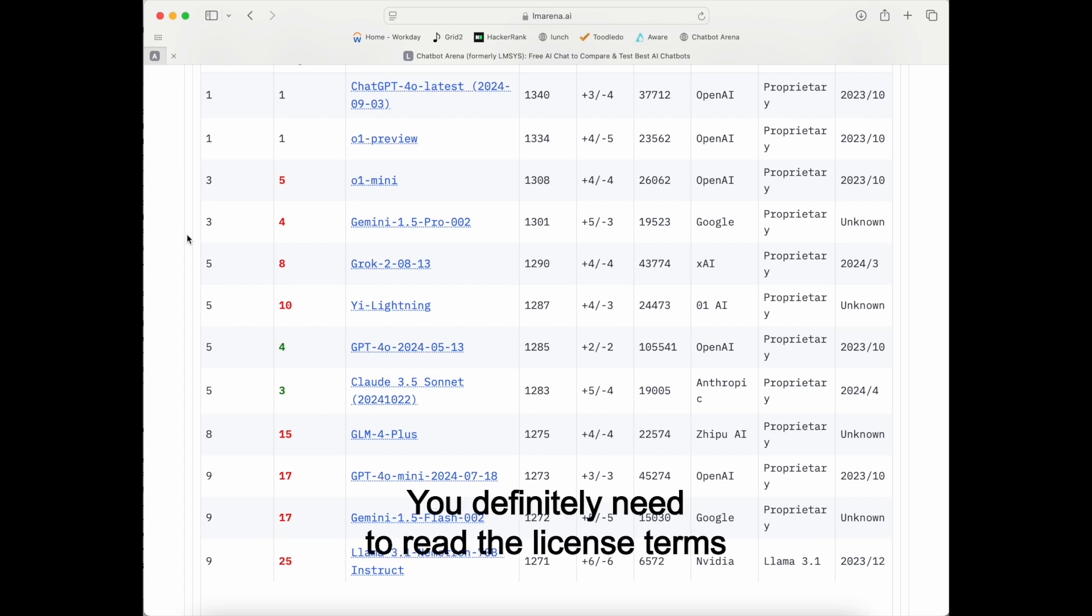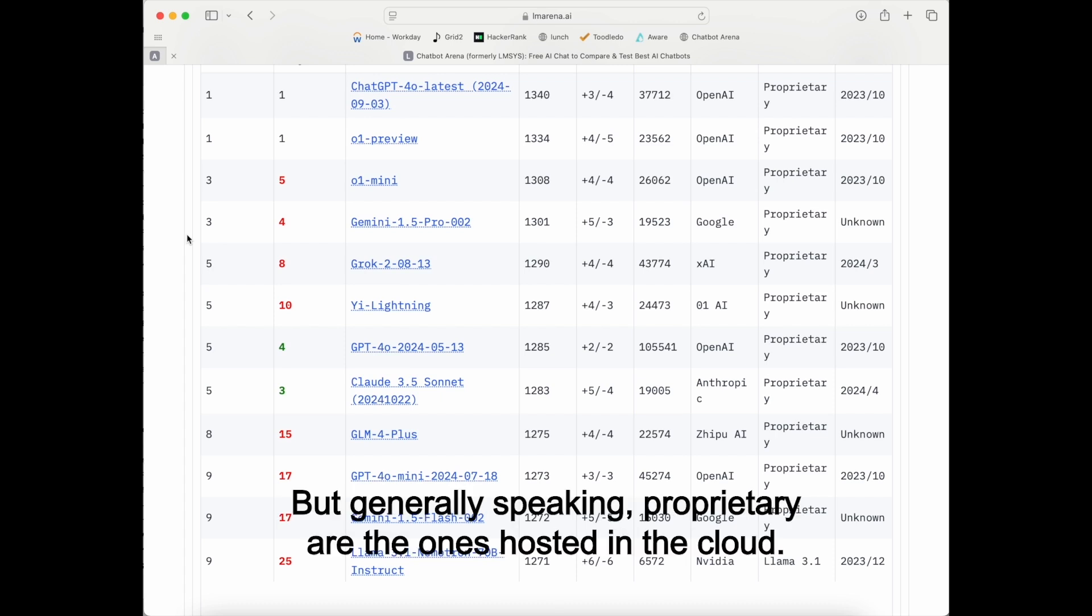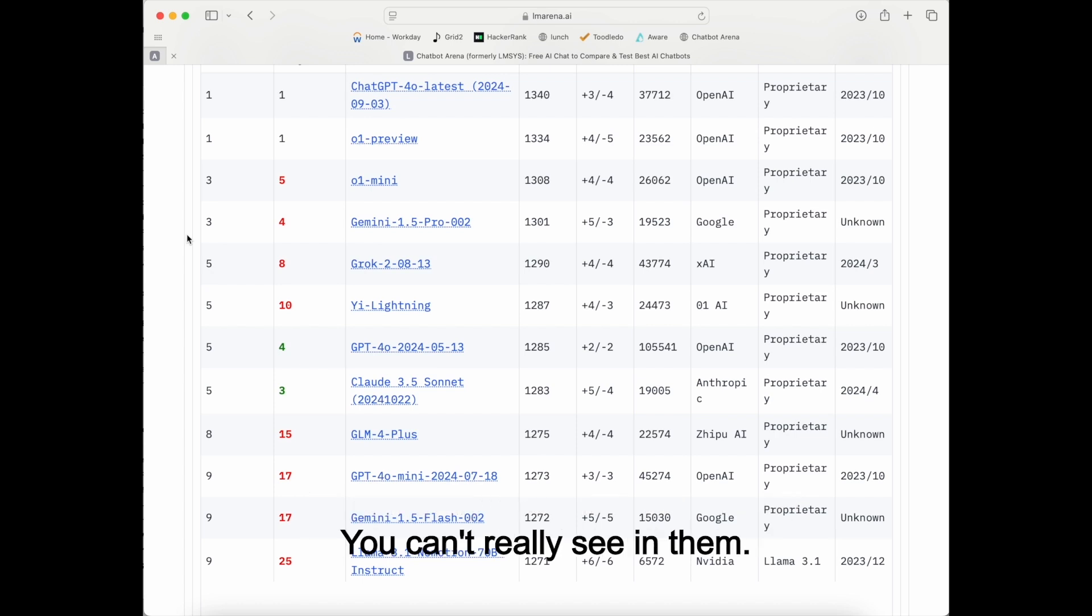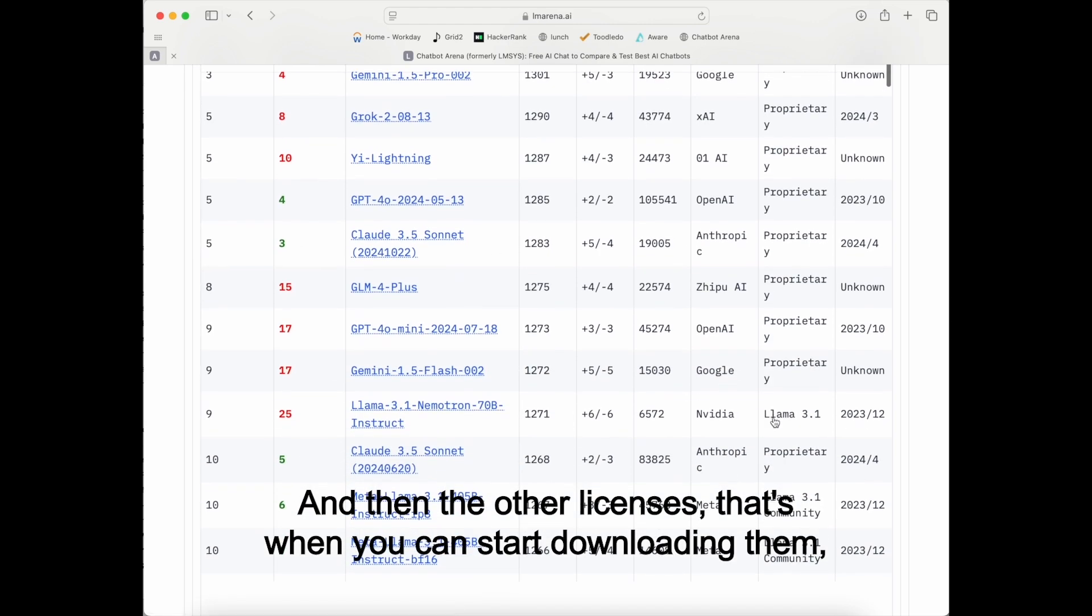You definitely need to read the license terms because it might not be open enough. Some have a restriction where you can use it up until, I don't know, 500 billion users per month. And then you have to pay, pay the creator or model or things, things like that. But generally speaking, proprietary are the ones hosted in the cloud. You can't really see in them. You can't muck with them, that kind of thing.